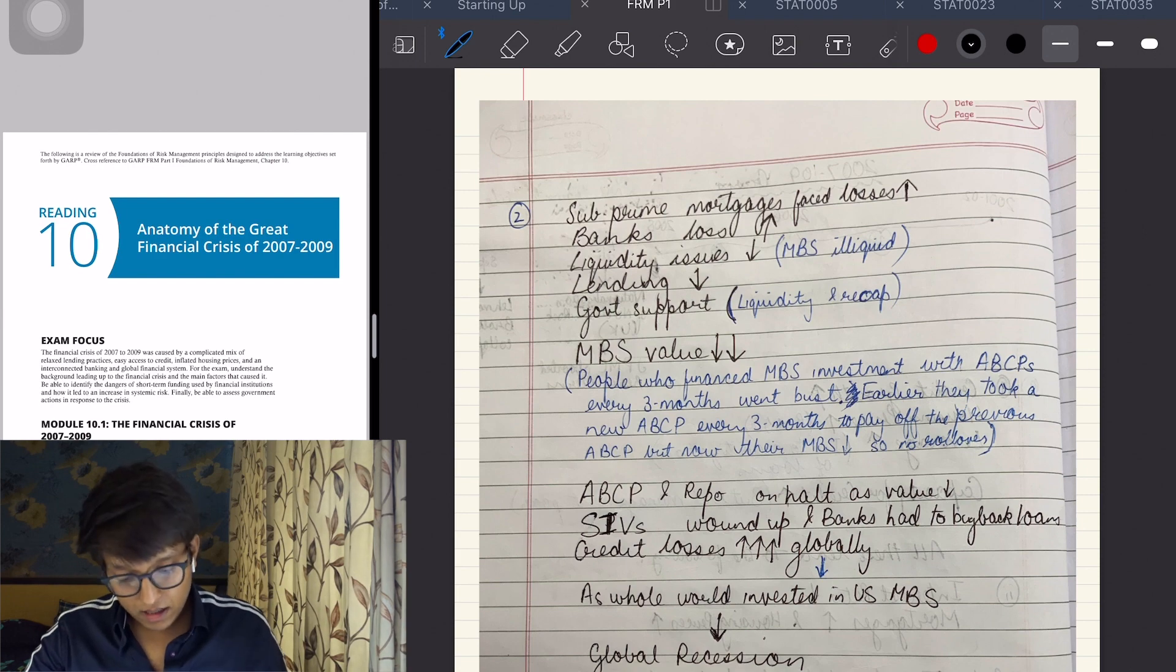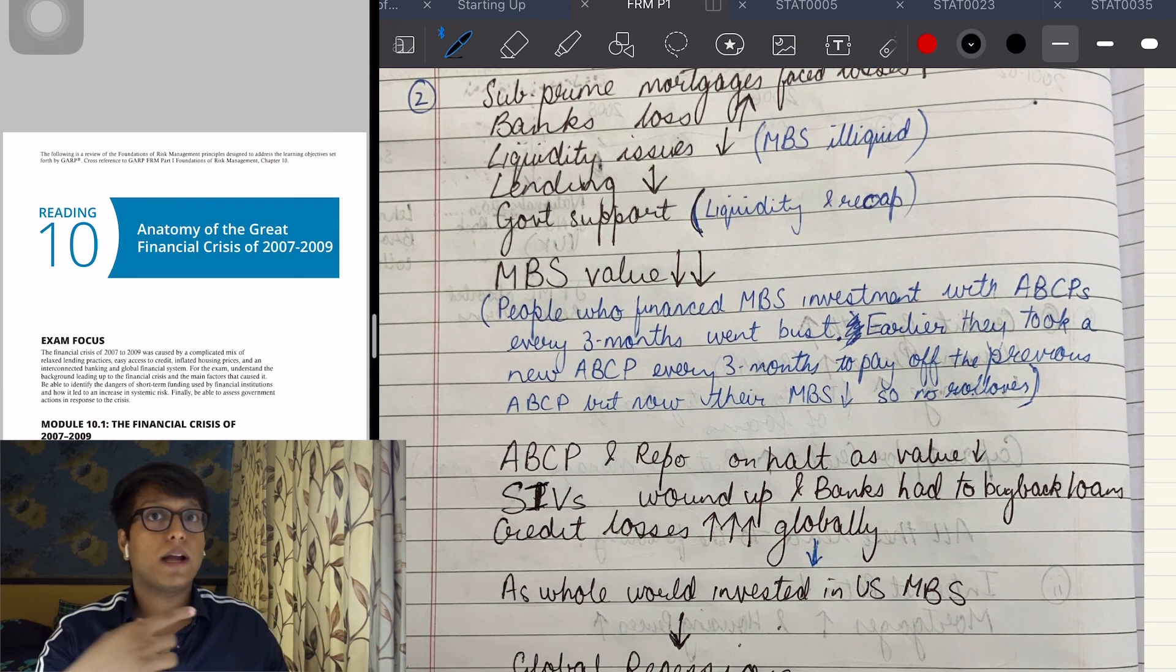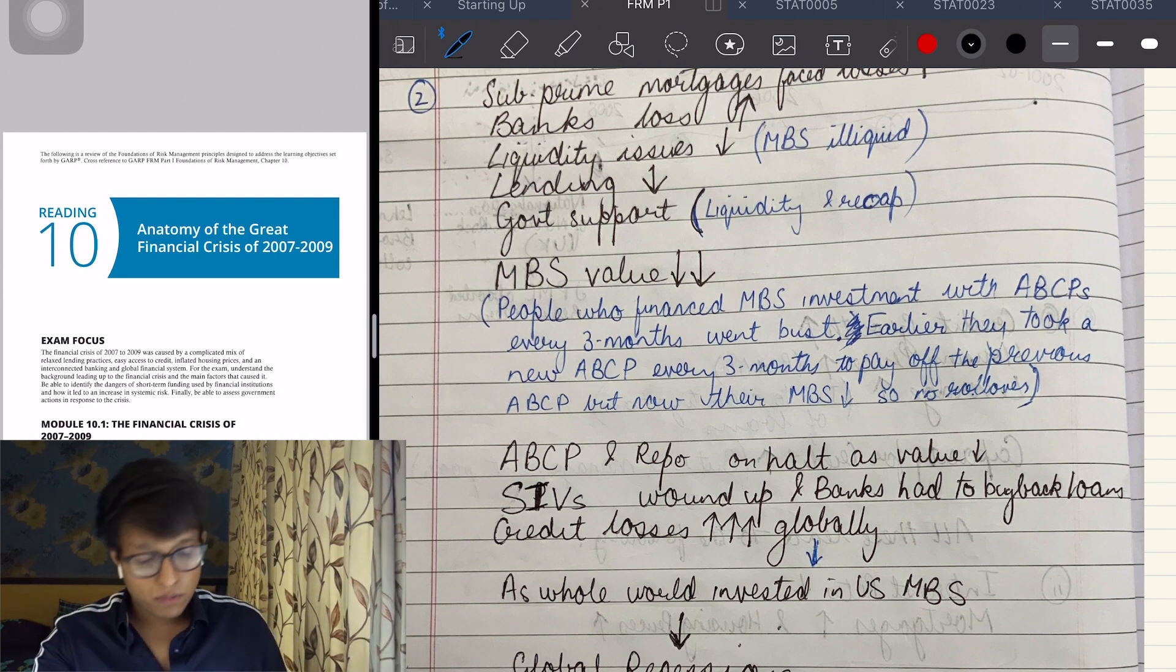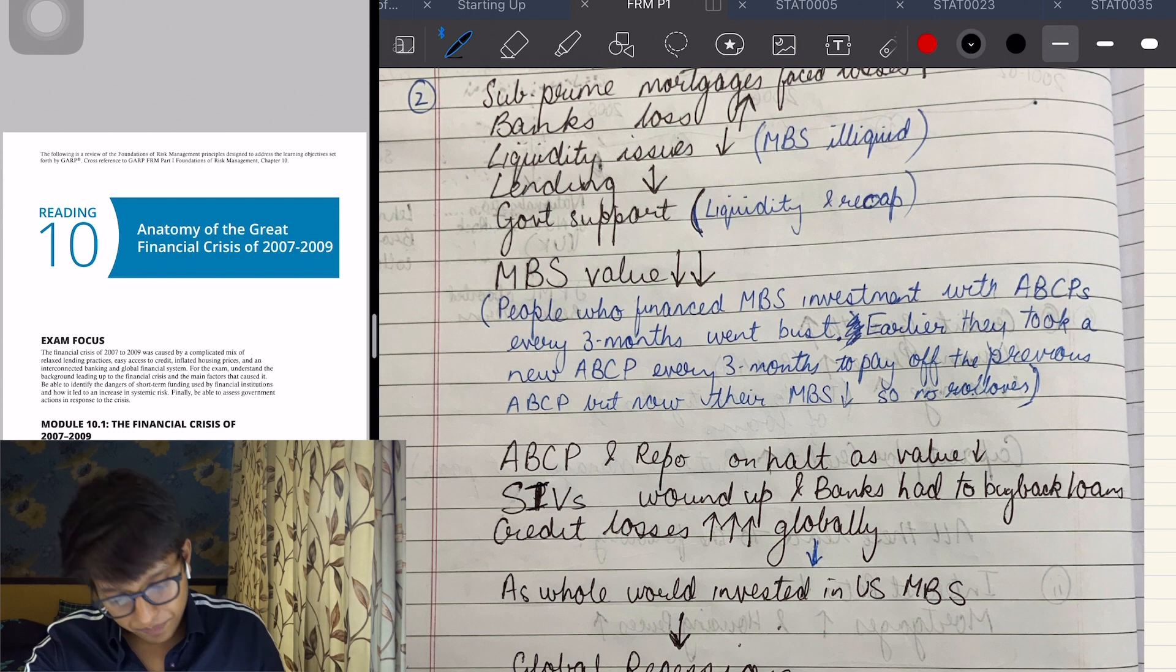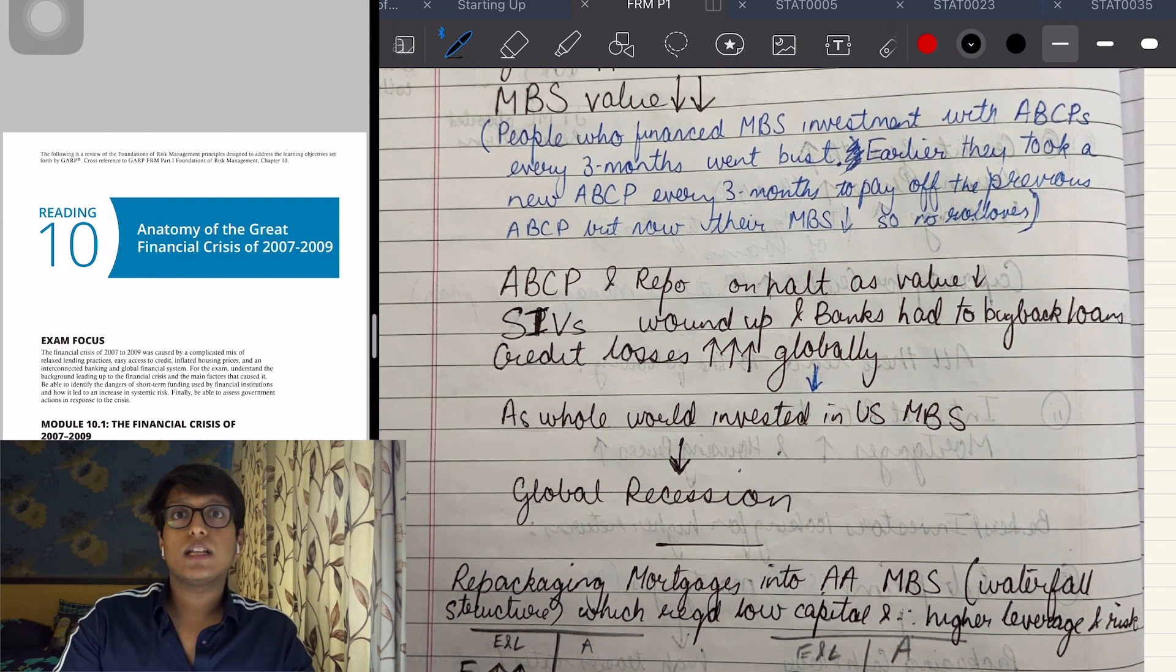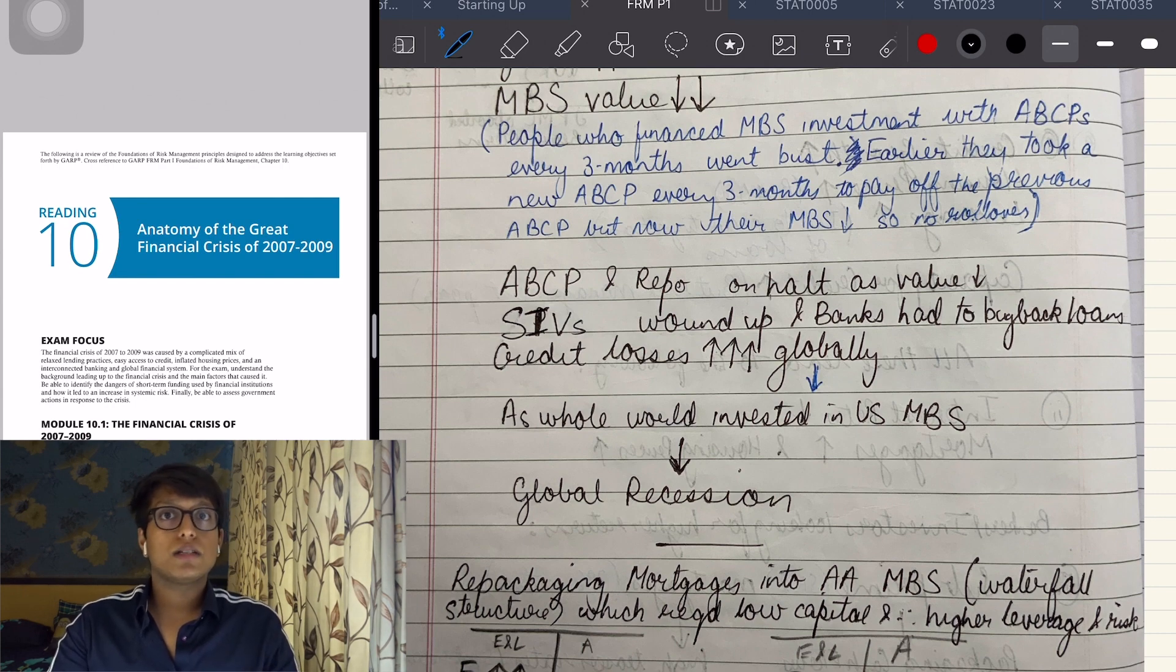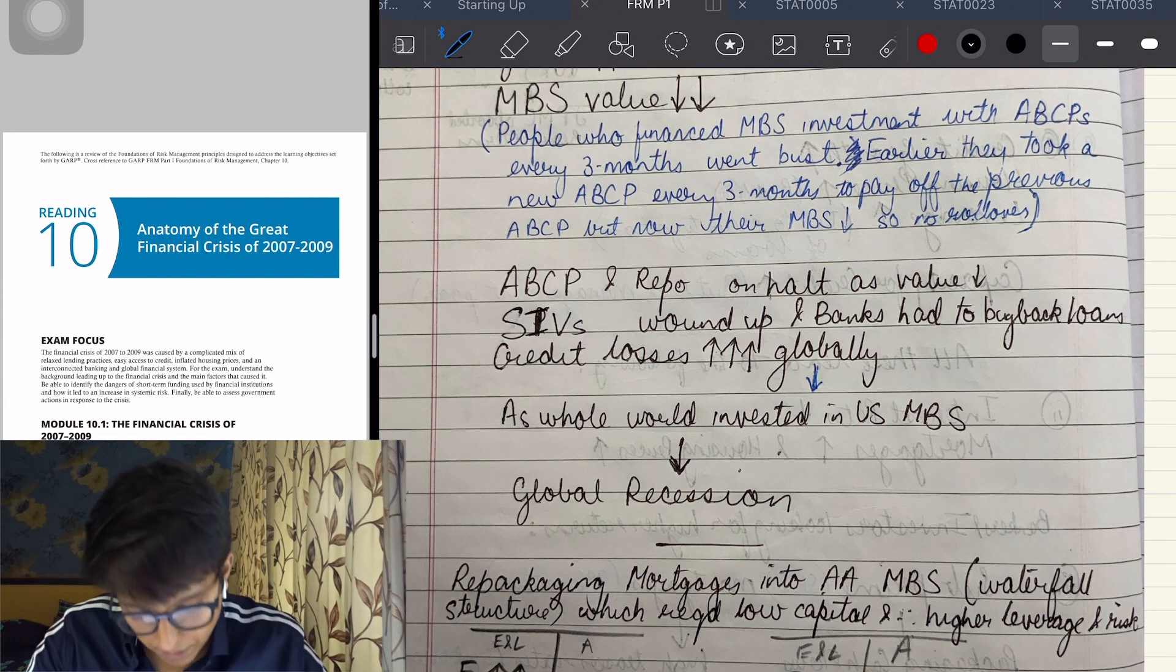MBS values fell. People who had financed the MBS investment with asset-backed commercial paper or overnight repos went bust, like Lehman Brothers. It wasn't just in the USA - banks in UK and Europe were also invested in the CDOs and CMOs. Northern Rock went bust because of CDO and CMO, and then there was London's bank, the German bank as well.